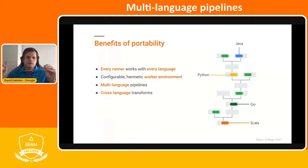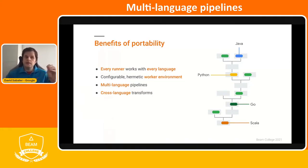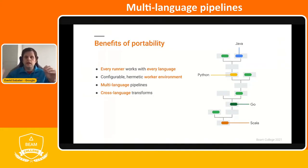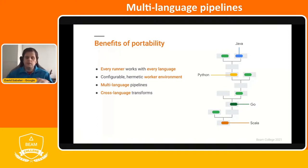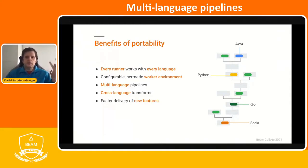Basically, you start with a multi-language pipeline and then you can double-click on it and have transforms that are only available in other languages — SQL transforms being one example. All of these bring you faster delivery of new features available in the SDKs.